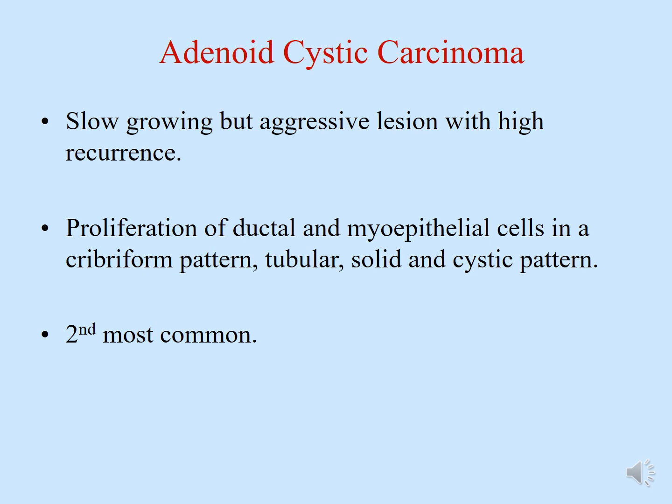Adenoid cystic carcinoma is a slow-growing but aggressive lesion with high recurrence. It is described as a 'relentless salivary gland malignancy.' It is composed of epithelial-myoepithelial neoplastic cells that form various patterns including cribriform, tubular, solid, and cystic. It is the second most common salivary gland malignancy, with an annual incidence of approximately 2 cases per 100,000.